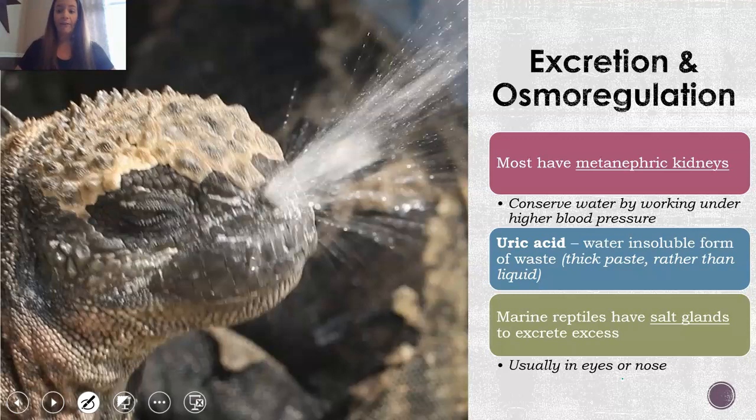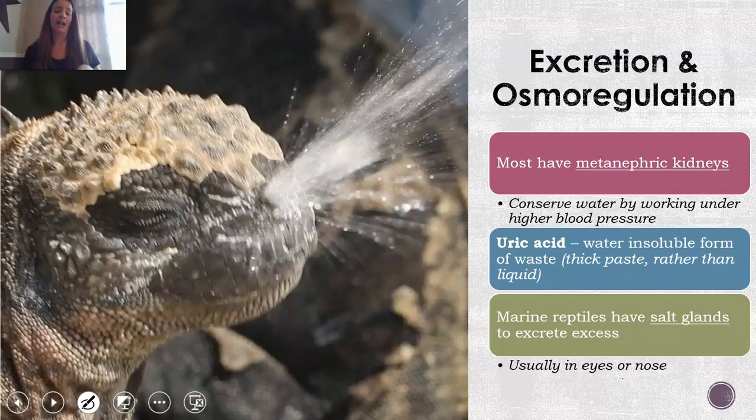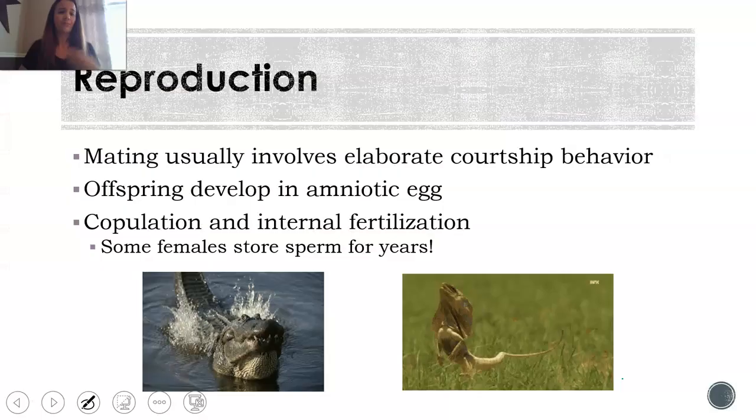Reptiles do have kidneys that help them conserve water, working under a higher blood pressure. Their waste is in the form of uric acid — kind of like a thick paste. There is liquid that comes out as well, but it all exits through one opening known as the cloaca. Most reptiles that live in marine environments also have salt glands, which is how they excrete excess salt, as you see in that picture.